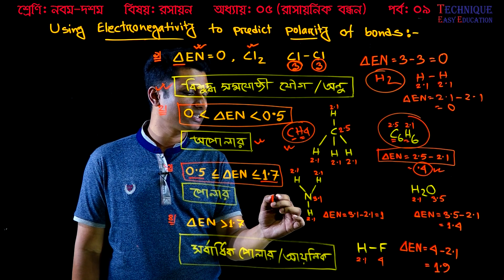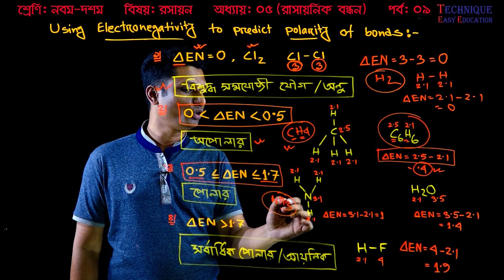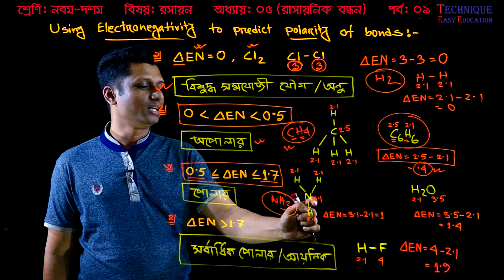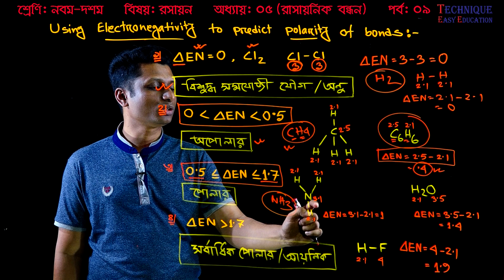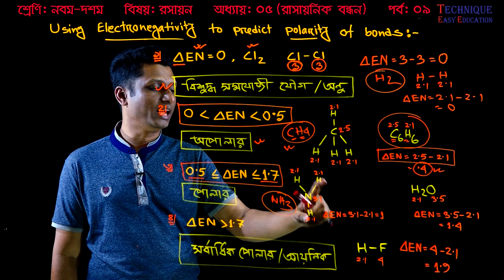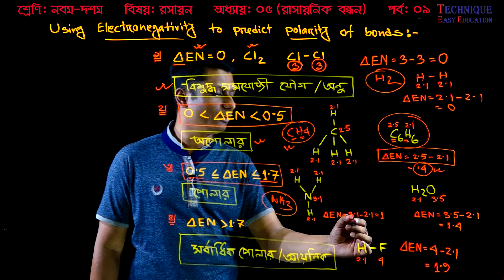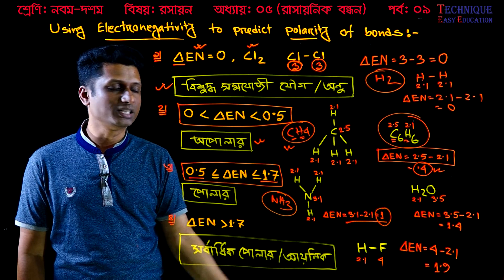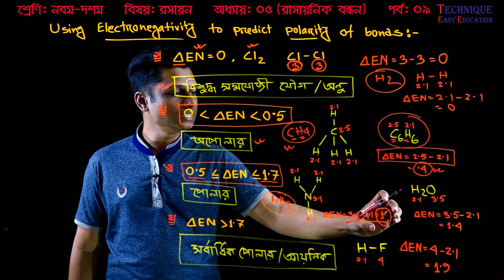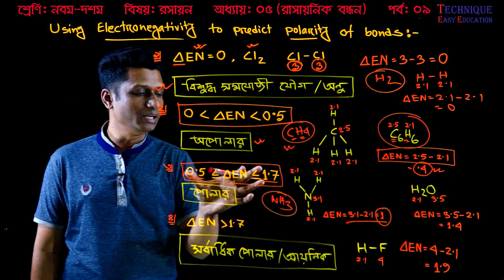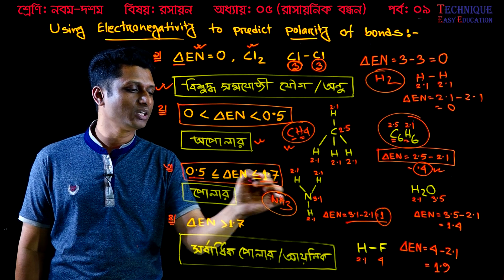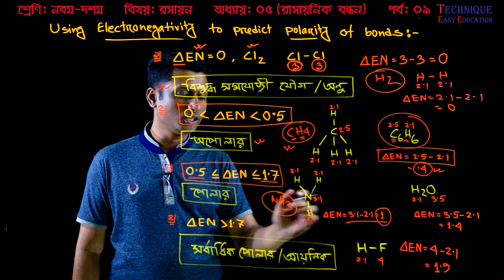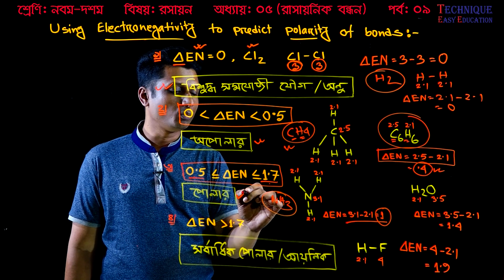Now let's look at ammonia, NH3: nitrogen and hydrogen. Nitrogen has electronegativity 3.1 and hydrogen is 2.1, so the difference is 1. Since 1 is between 0.5 and 1.7, we call this a polar area — the bond is polar covalent.